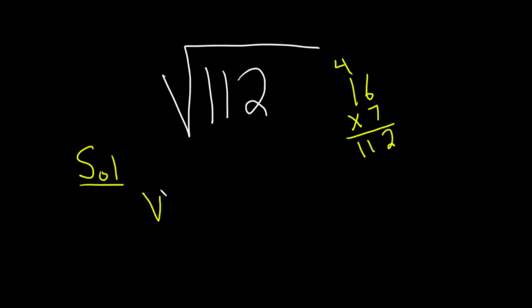So we can write this as square root 112 equals square root 16 times 7.